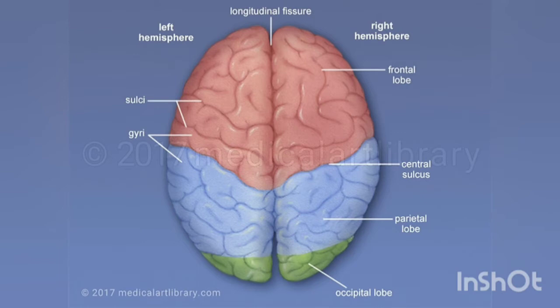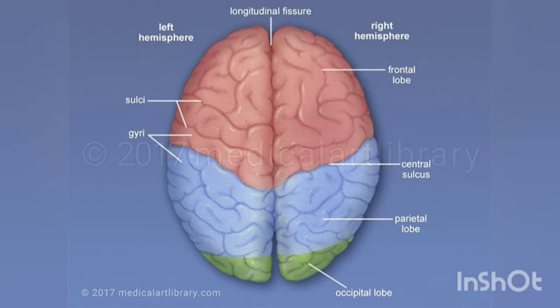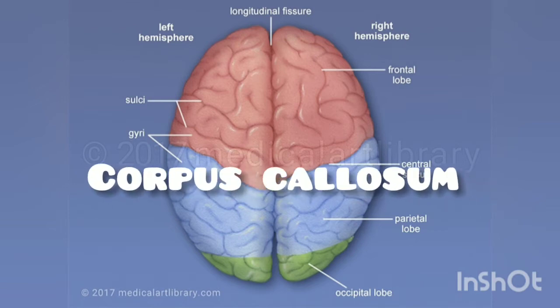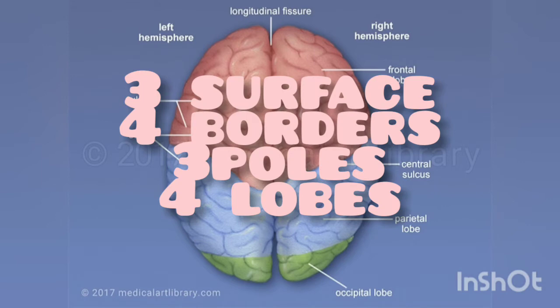The cerebrum is made up of two cerebral hemispheres, the right and the left, which are incompletely separated from each other by the median longitudinal fissure. The two hemispheres are connected to each other across the median plane by the corpus callosum. Each hemisphere contains a cavity — the lateral ventricle. The cerebral hemisphere has three surfaces, four borders, three poles, and four lobes.